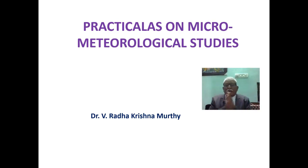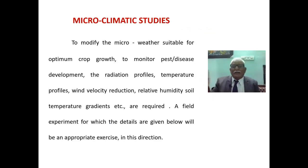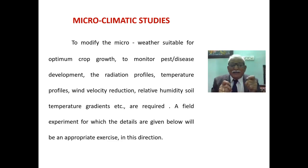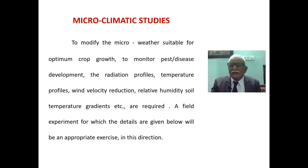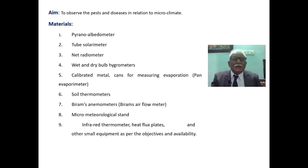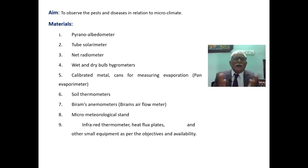How to conduct a micrometeorological experiment for basic students — I am going to discuss in this class. The definition of micrometeorology I have given several times; to modify the microclimate suitable for crop growth, to monitor pests and disease development. Radiation, temperature, wind velocity, relative humidity, and soil temperature ratings are all required for a field experiment. The aim is to observe pests and diseases in relation to microclimate, for example, crop growth and development.